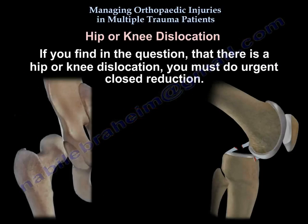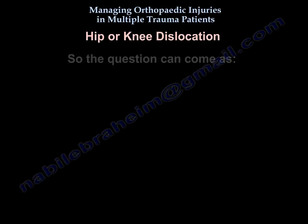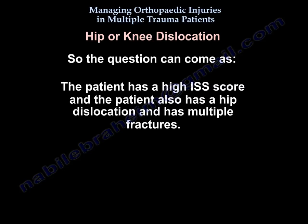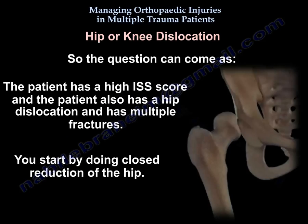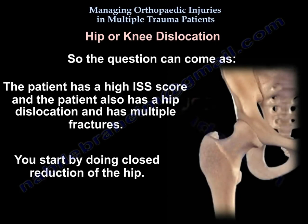If you find in the question there is a hip or knee dislocation, you must do urgent closed reduction. For example, the patient has a high ISS score, also has a hip dislocation and multiple fractures — you start by doing closed reduction of the hip.